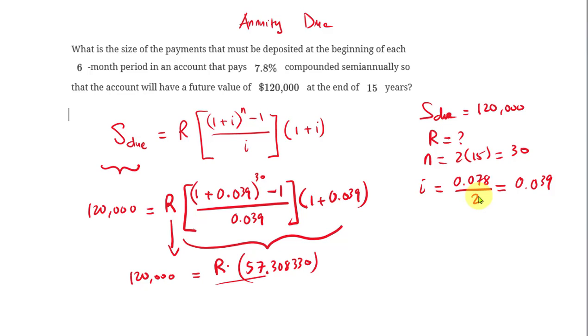Now to solve for R, we are going to divide both sides by 57.308330, and I'll do the same thing here, 57.308330, and that will take away that. And you should be able to use any calculator to solve for R or make the calculation for R, and it should be around $2093.94.